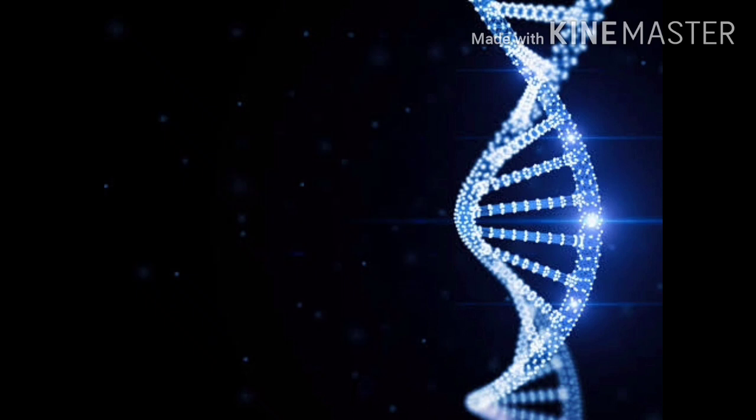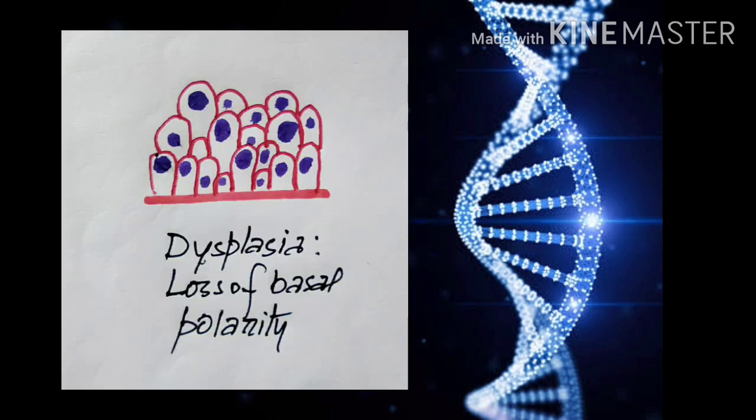The next feature is loss of basal polarity. Now what is basal polarity? Basal polarity means the nuclei usually lie in close contact with the basement membrane. But in dysplasia there is distance from the basement membrane.